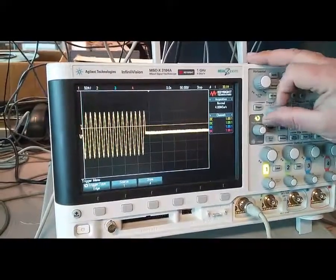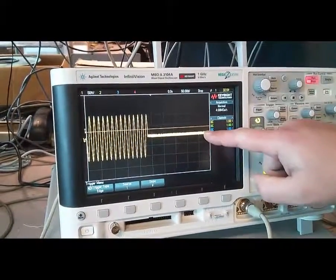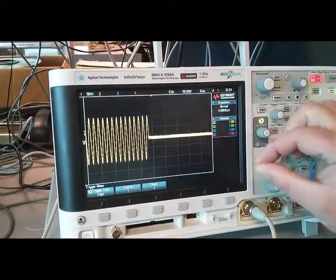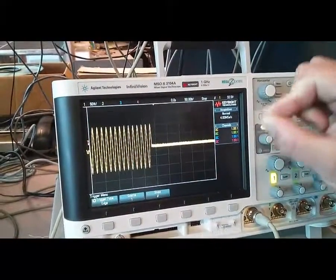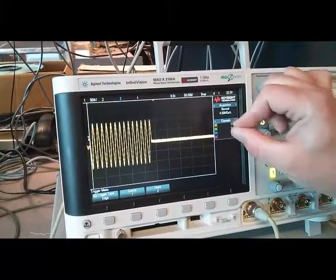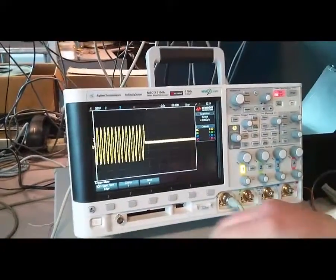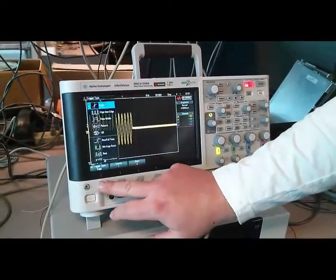And adjust the threshold, so that it's above the baseline noise of the scope. Okay, and at the same time, you know, we can call it off. Okay. So, that's how I set the trigger threshold.